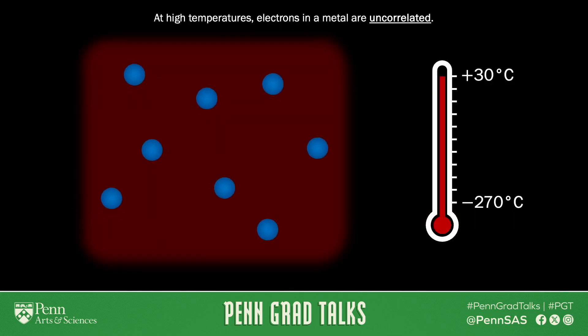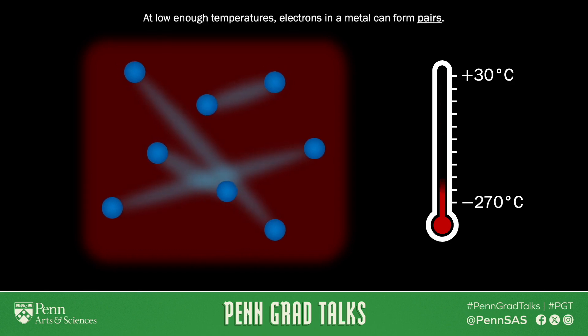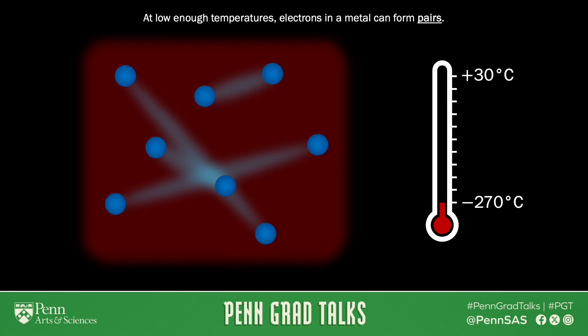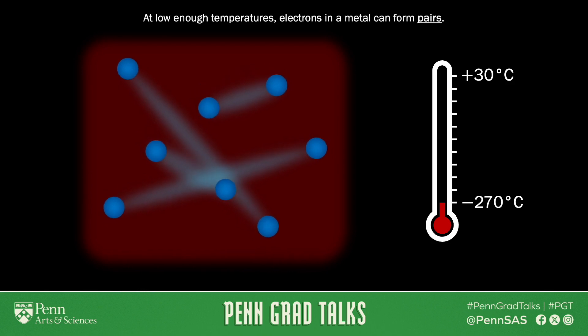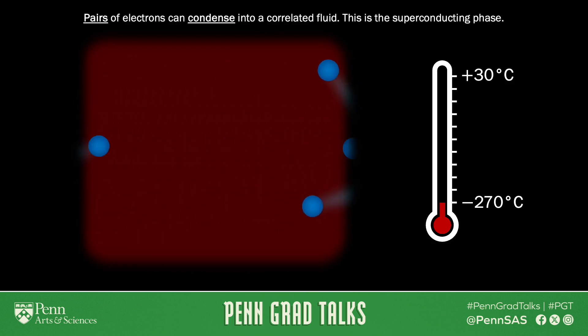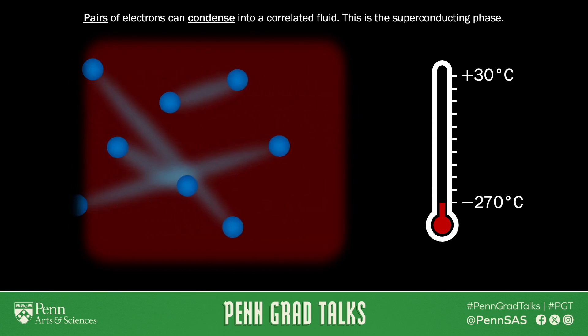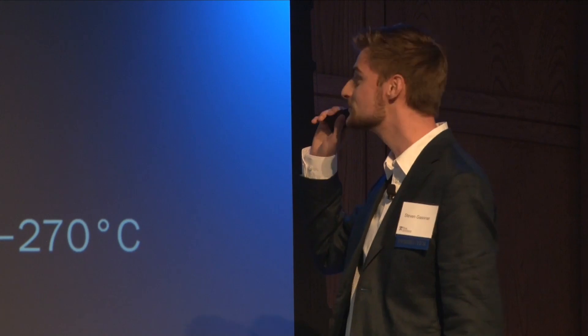Electrons face this problem every single day. At high temperatures in a metal, electrons are uncorrelated, all doing their own thing, all getting in each other's way. But in some metals, when you cool them down, the electrons partner up into pairs. And what pairs of electrons can do that individual electrons cannot — they condense into one giant superfluid that can flow without resistance. Did you know that about 10% of our electrical energy is wasted in power lines just getting it from place to place? It's because our electrons are getting stuck in traffic. Imagine if we could get a superconductor to work at room temperature and the environmental impacts that might have.